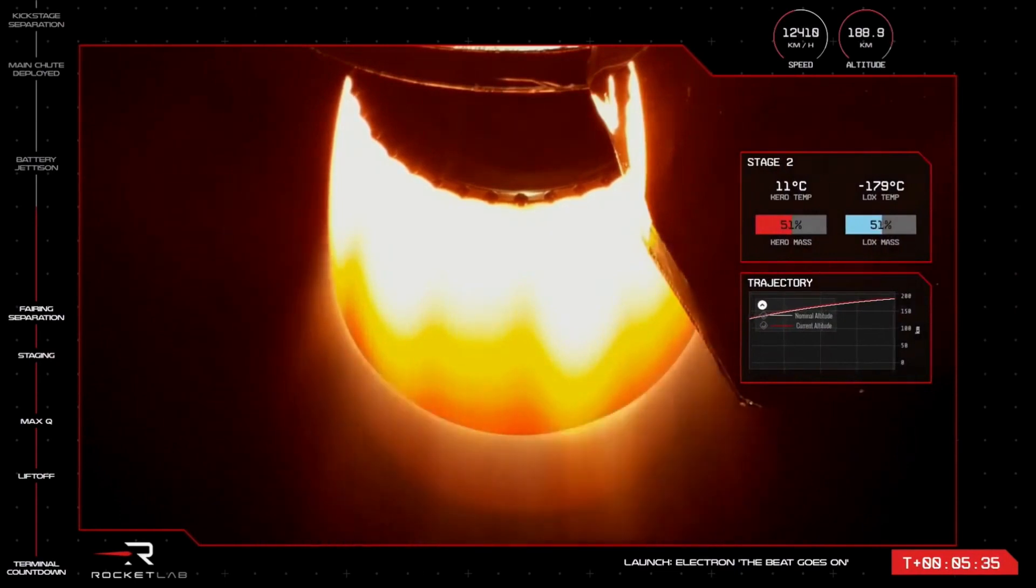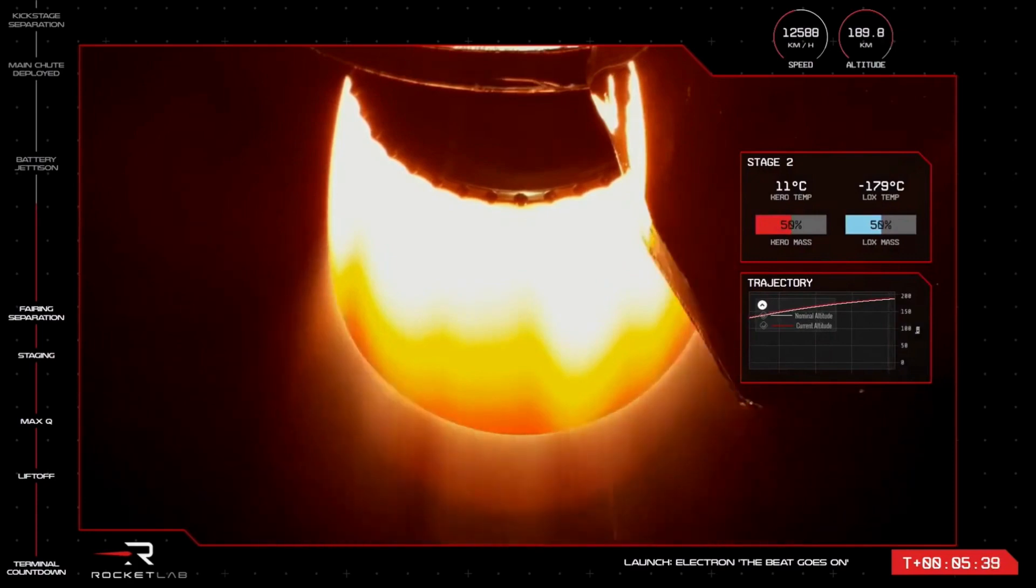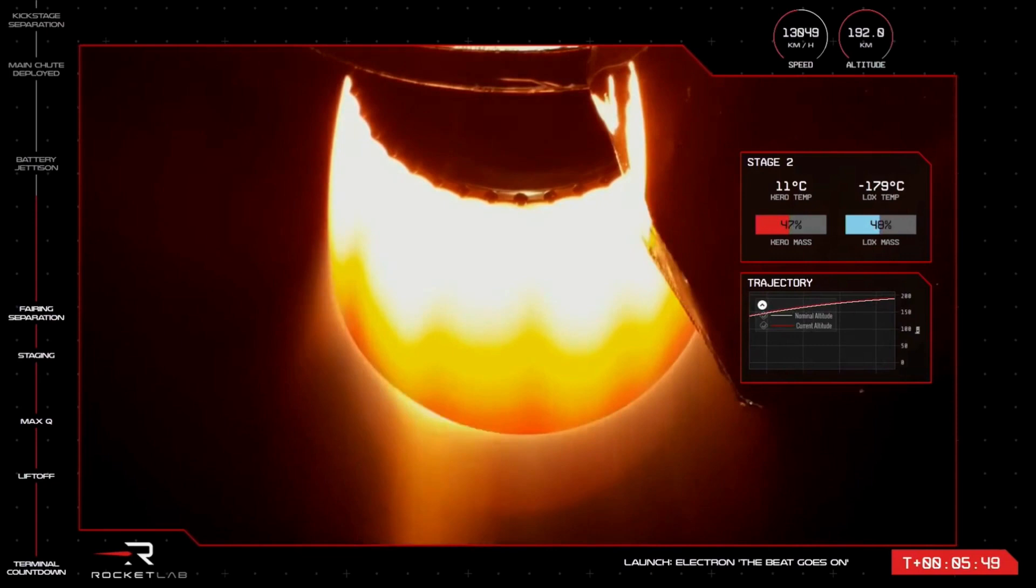Back to the vehicle though, and as I said, all looks nominal. You can see there that Stage 2 Rutherford engine is burning bright to orbit. Stage 2 guidance nominal, 200 seconds remaining. HVB battery discharge nominal, approaching hot swap in roughly 30 seconds.